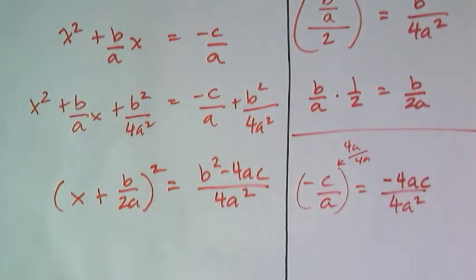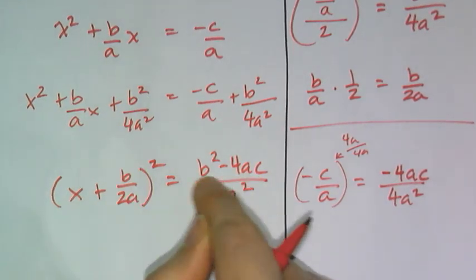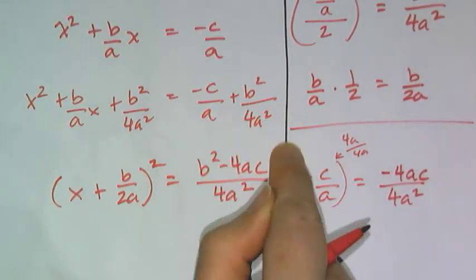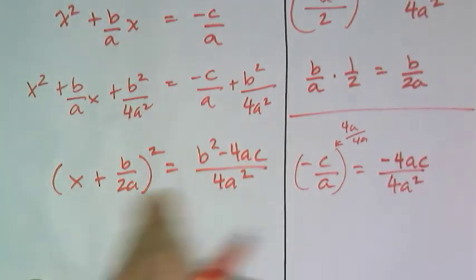And so now I can start to see parts of the formula. The b over 2a which was the line of symmetry, the b squared minus 4ac which is the discriminant. So now I have to solve for x by square rooting both sides.